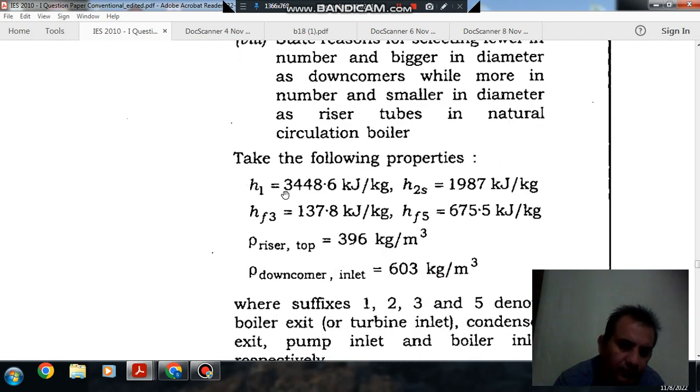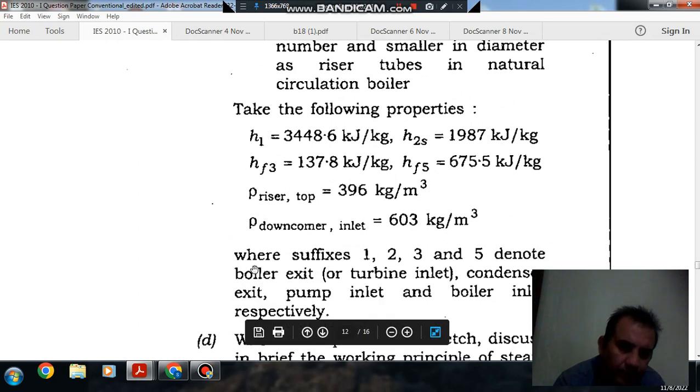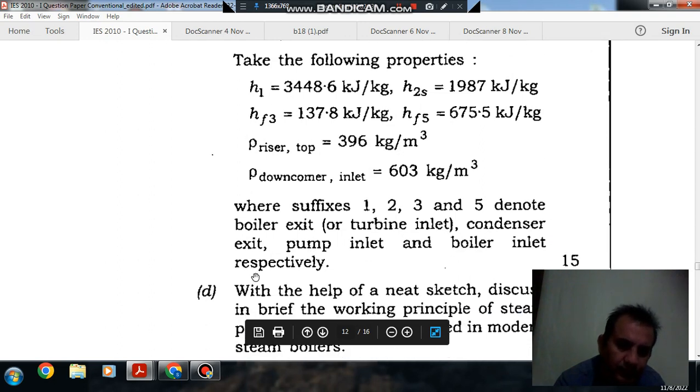9. Tabulate the following properties. These properties are H1, H2S, HF3, HF5, rho riser top and rho downcomers. Where suffix 1, 2, 3 and 5 denote boiler exit, turbine inlet, condenser exit, pump inlet and boiler inlet respectively.